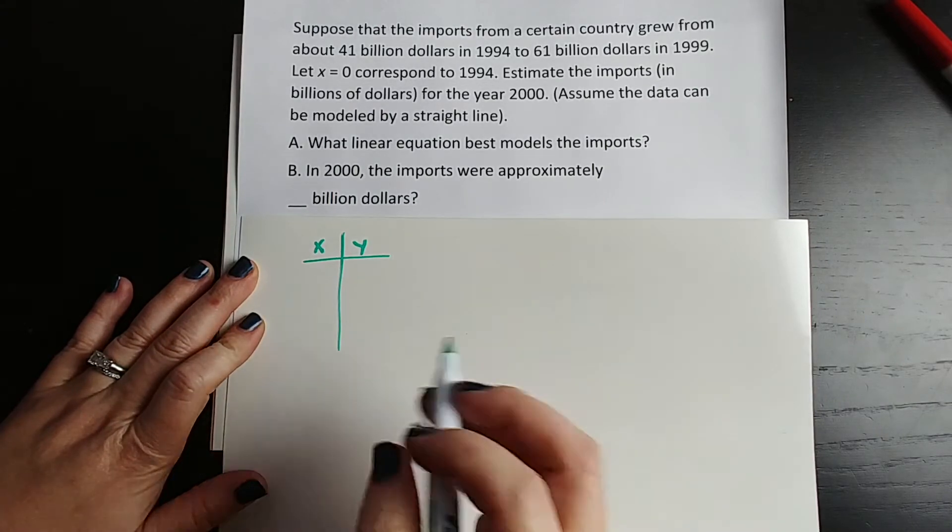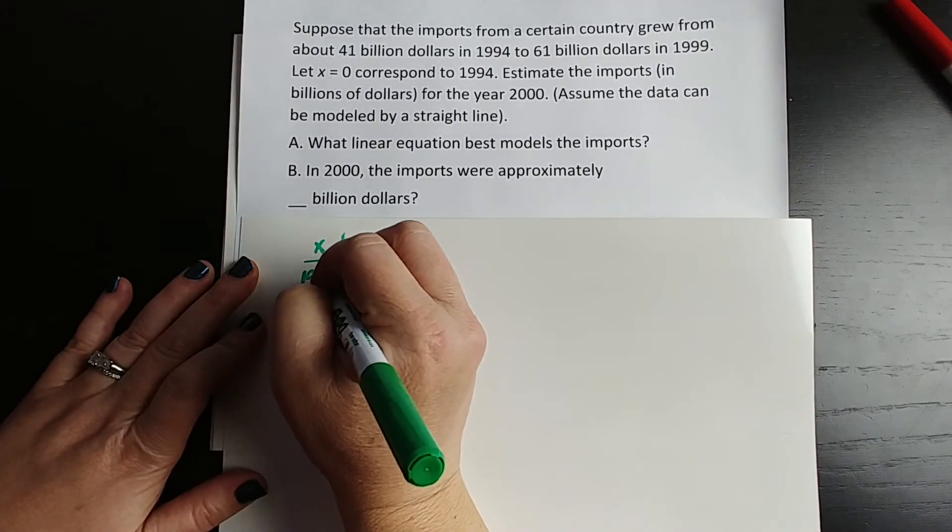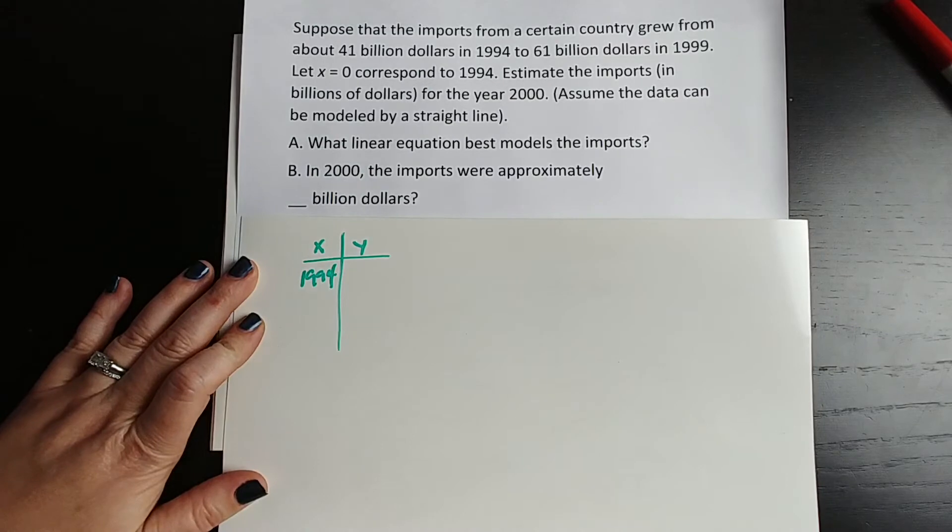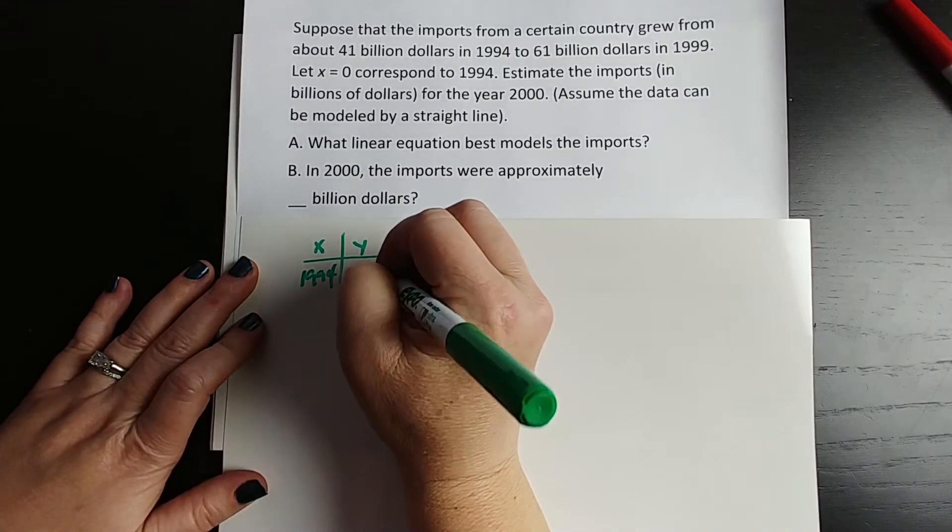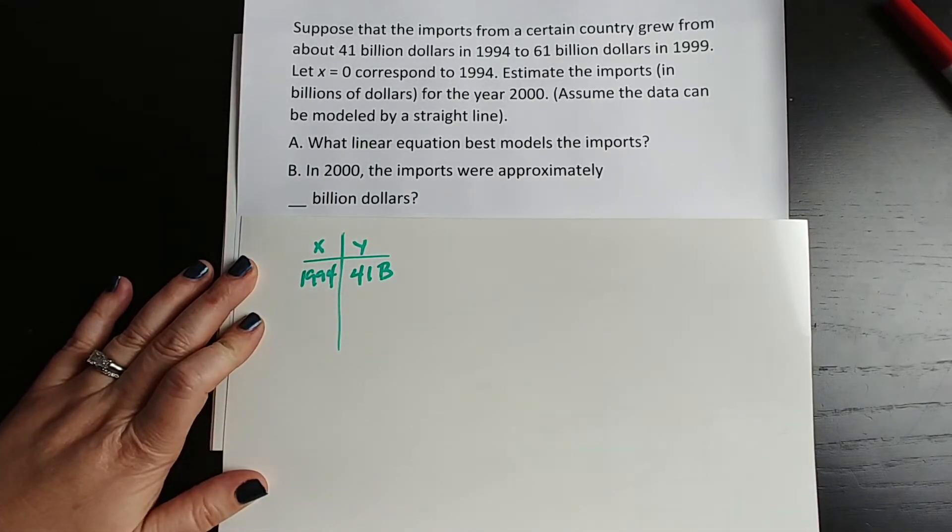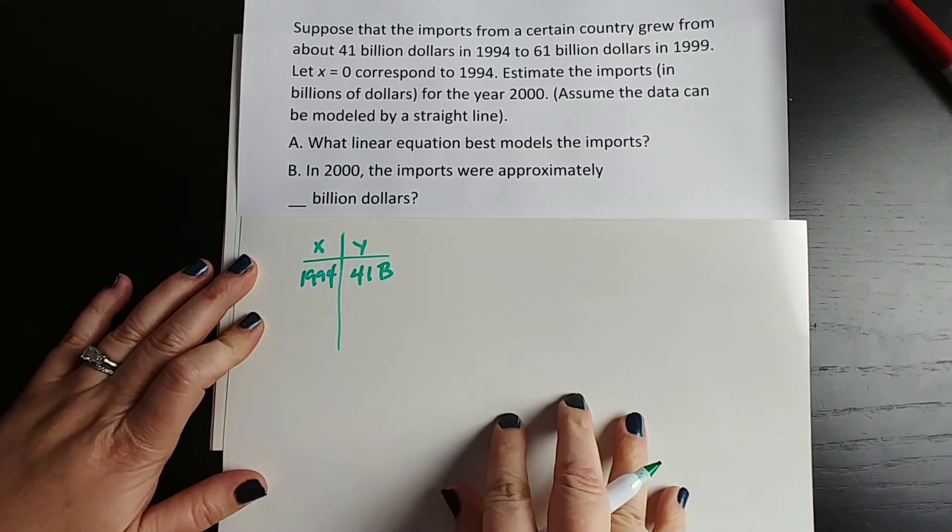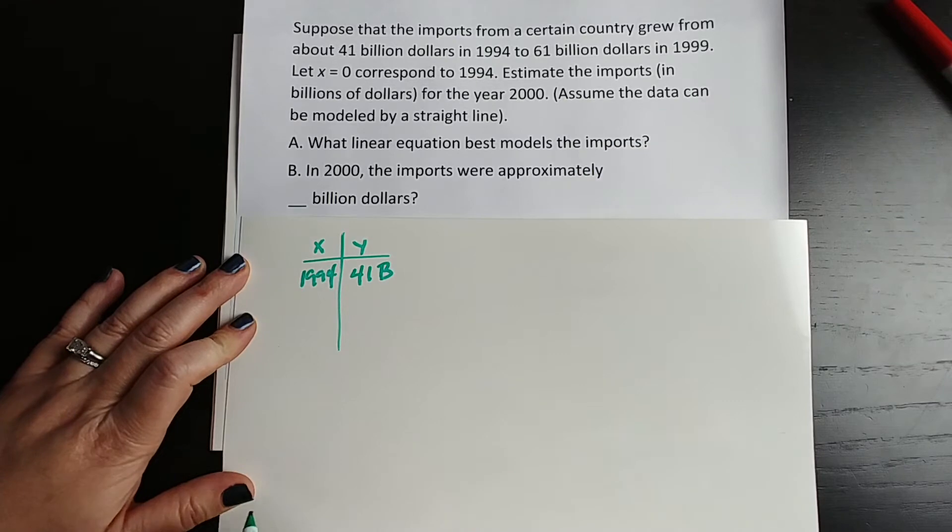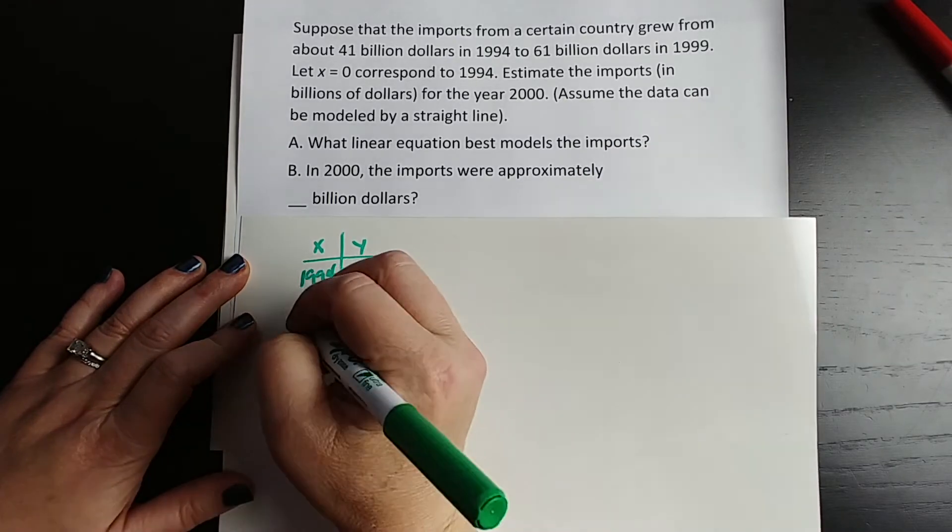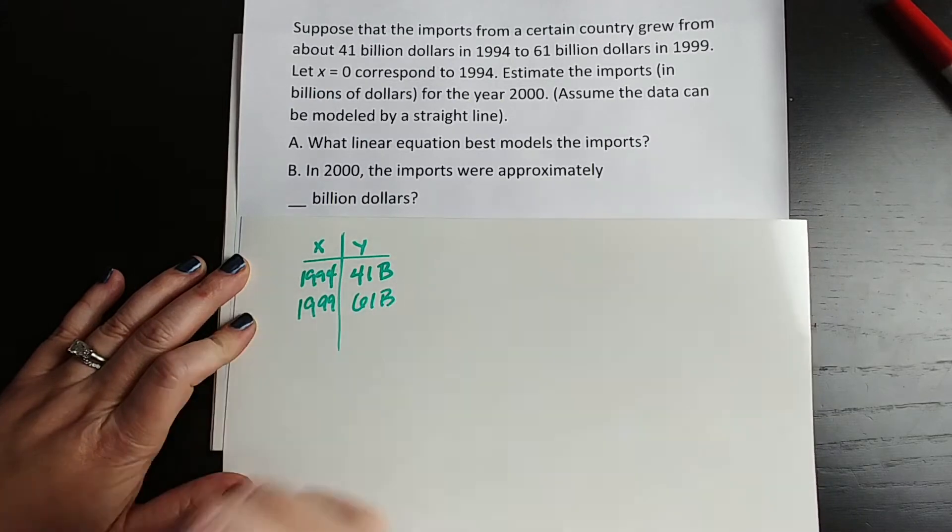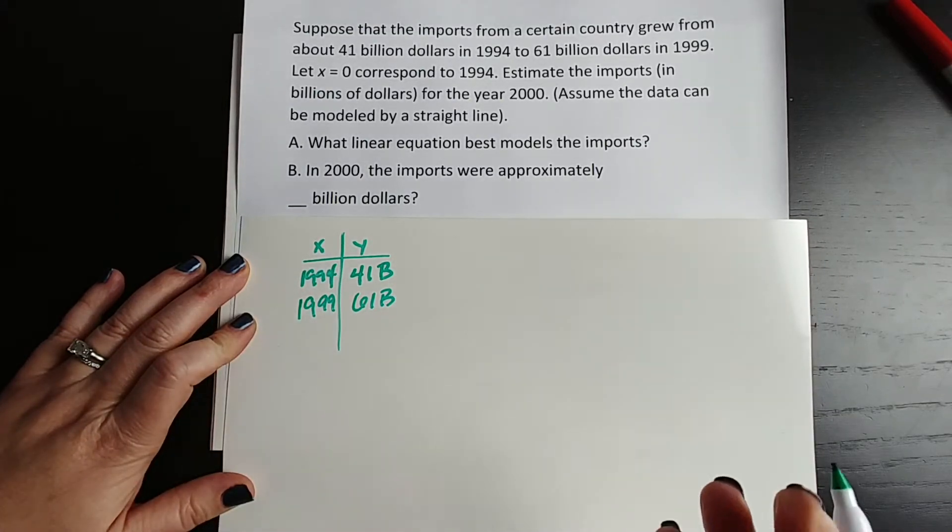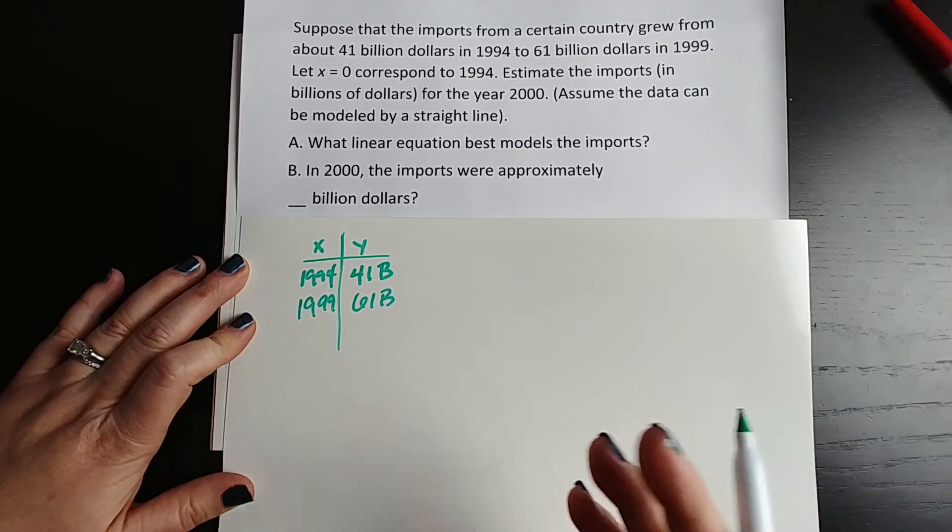And you would say that in 1994, that's where we start, in 1994, they were at $41 billion. And so we're going to just put a B here, but we're just going to use 41 and know that our answer is in billions. Then we're going to say, what else did they give us? So 1999, it was $61 billion. So in five years, it went up $20 billion. So you're looking at $4 billion a year.